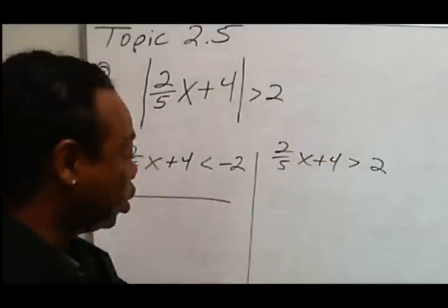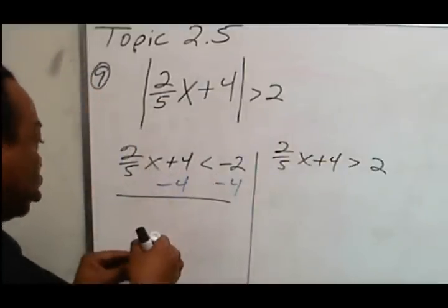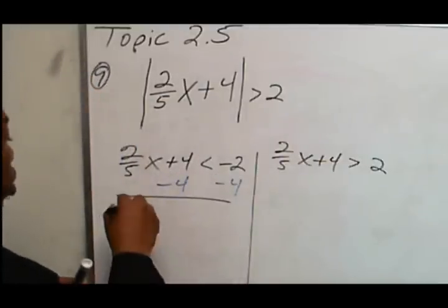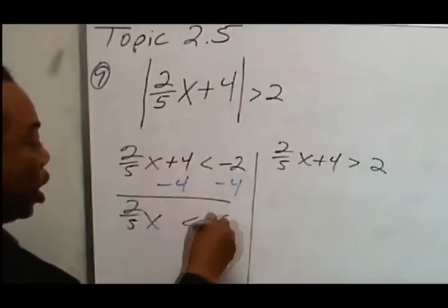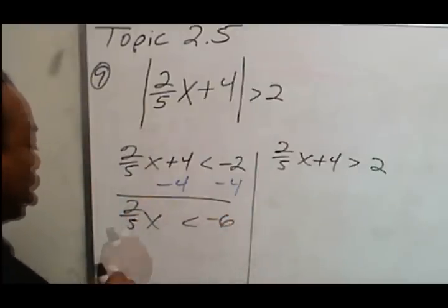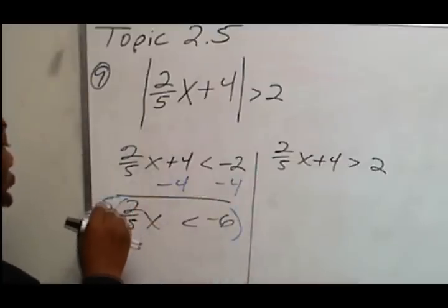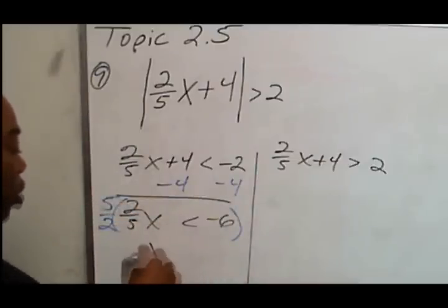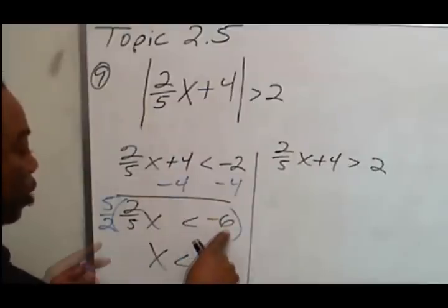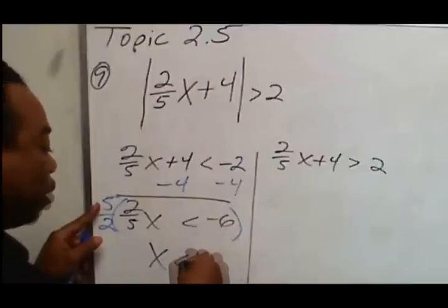To solve this equation, I'm going to subtract 4 from both sides, and I'm going to get 2/5x is less than negative 6. Then I'll multiply both sides by the reciprocal of 2/5, which is 5/2. This becomes x, and this becomes 6 divided by 2 is negative 3, times 5 is negative 15.